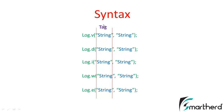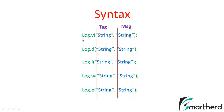The first parameter appears under the tag column and the second parameter appears under the message column. It is recommended to write a meaningful tag — for example, if this log statement is inside your main activity, write 'MainActivity' as the tag and under the message write something like 'We are inside the main activity', and you will get that output.